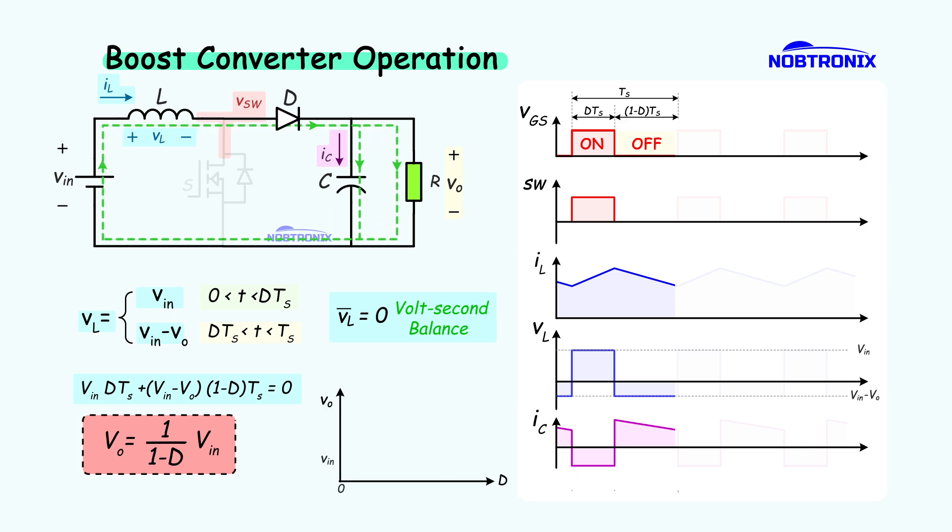The graph shows that at a zero duty cycle, the output equals the input. As the duty cycle increases, the output voltage climbs, and in theory, it becomes infinite at 100%.